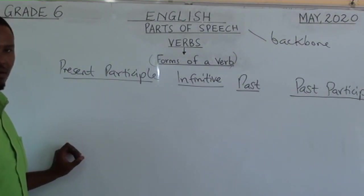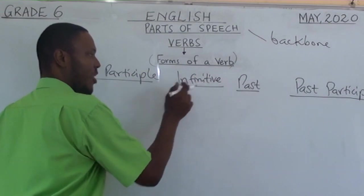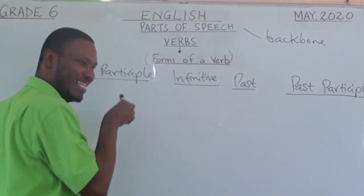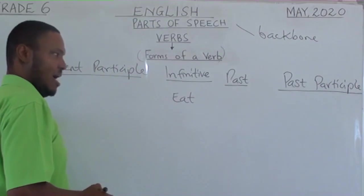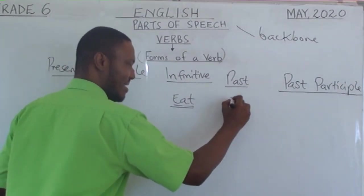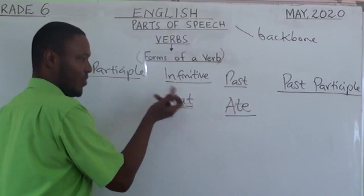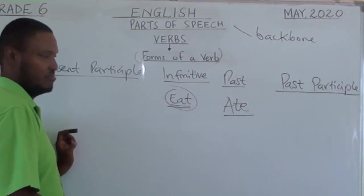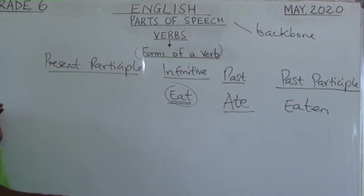We'll look at one verb from those we've listed — the word eat. The word eat is in the present, which is the infinitive form — the now form of the verb. Past means something that happened, so the past form of eat is ate. It's just an interchanging of the letters of the verb. The past participle form is eaten. And the present participle form is eating.